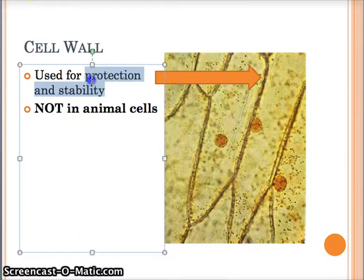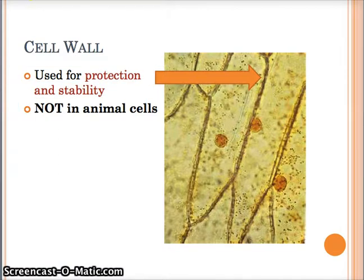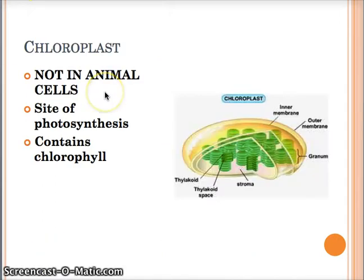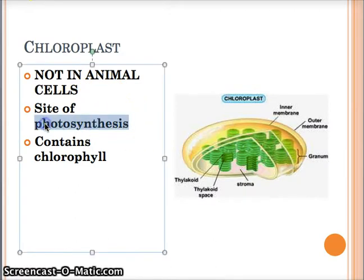Next is the cell wall. This is only going to be in plants. The cell wall is for protection and stability - it's this big thick line in the picture. And we're not going to have a chloroplast because we are animals, so again, the chloroplast is only in plants.